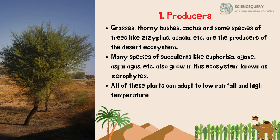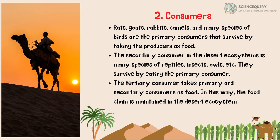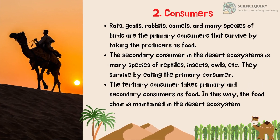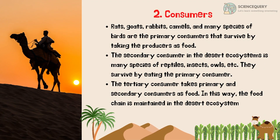All these plants can adapt to low rainfall and high temperature. The second biotic factor of the desert ecosystem are the consumers. Rats, goat, rabbits, camel, and many species of birds are the primary consumers that survive by taking the producers as food. The secondary consumers in the desert ecosystem include many species of reptiles, insects, owl, etc. They survive by eating the primary consumers.